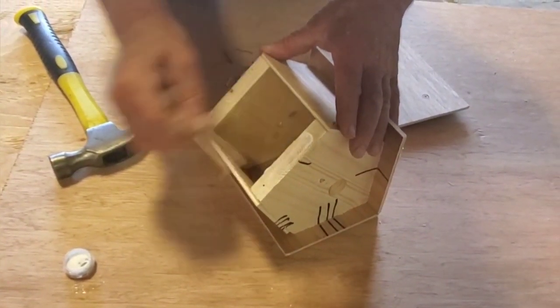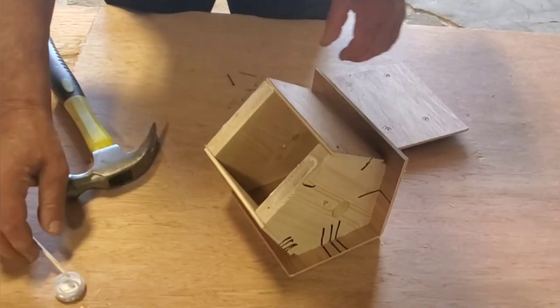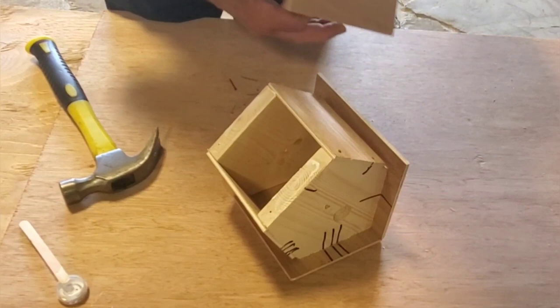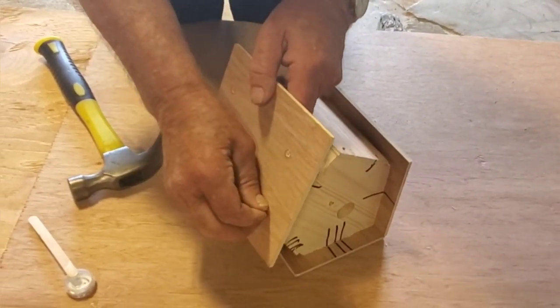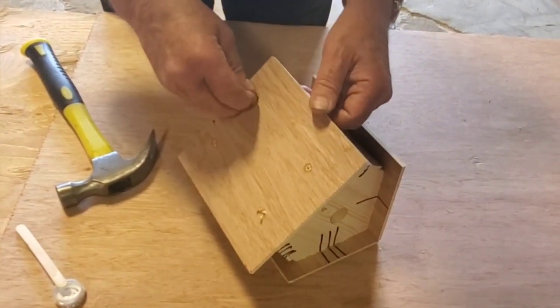So once we have that established, we're going to glue again and then put our nails in for lining so that we get the base on square.